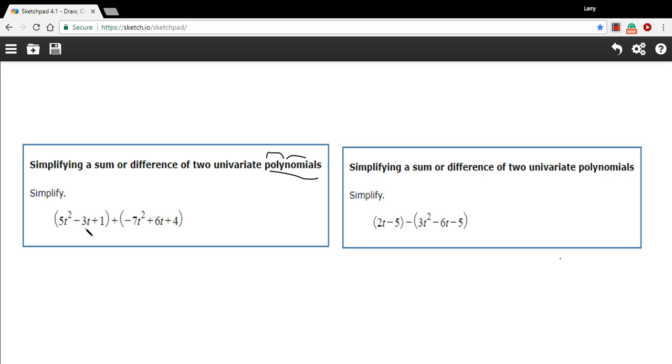So polynomials have many terms. So we've got a t-squared term, a t-term, a number term in both of these, and we need to add these together.